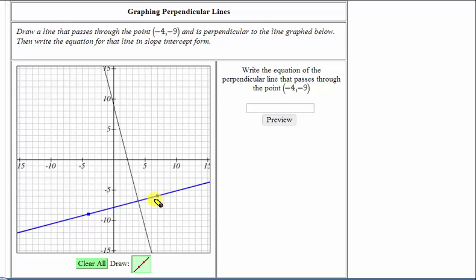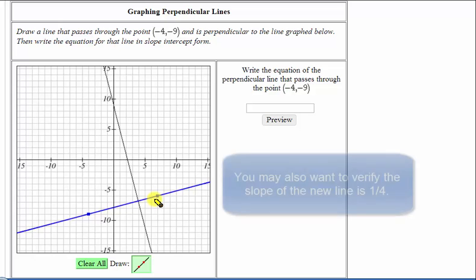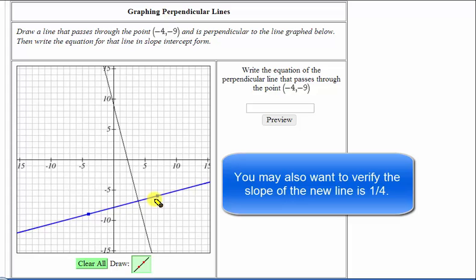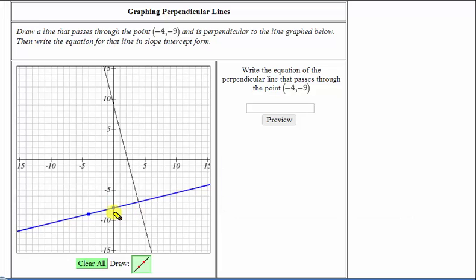Notice here the two lines are perpendicular. Let's go ahead and move our second point over to the vertical intercept, since the vertical intercept is an integer value. Notice how it's right here, so we'll click there. Now let's take the graph back to our presentation and show some work.